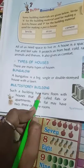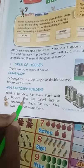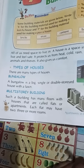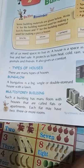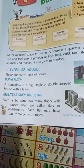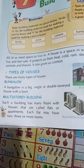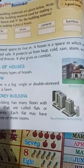Then multi-story building. Such a building has many floors with houses that are called flats or apartments. So multi-story buildings mein jo hai, flats or apartments jo hai, each floor pe rehte hain. Each flat may have two, three or more rooms. Yeh multi-story apartment mein ek flat ke andar doh ya teen ya usse bhi zyada rooms hote hain.